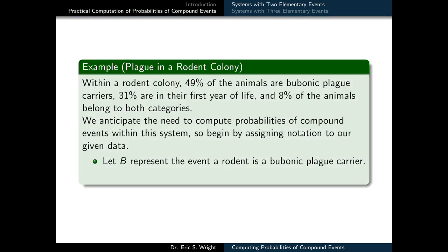Let's imagine within a rodent colony, 49% of the animals are bubonic plague carriers, 31% are in the first year of their life, and 8% of the animals belong to both categories. We anticipate the need to compute probabilities of compound events within this system, so let's begin by assigning notation to the given data.